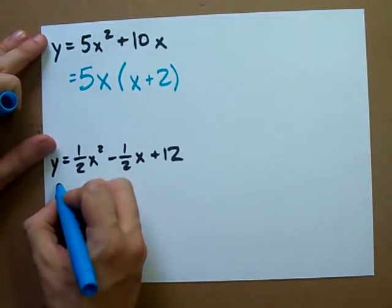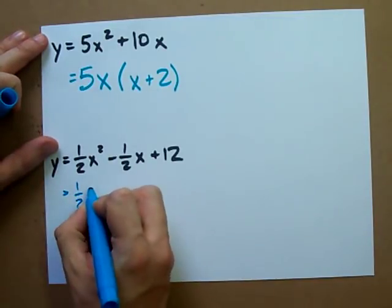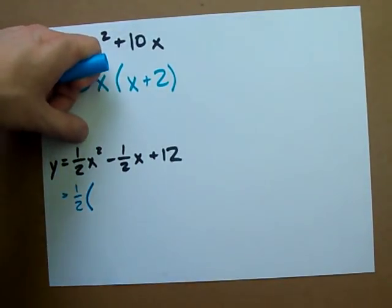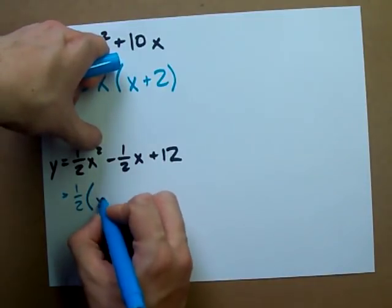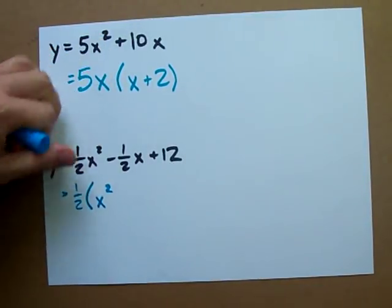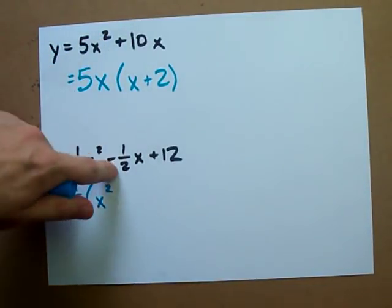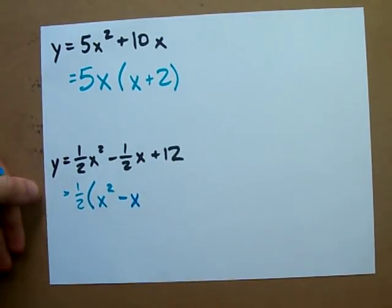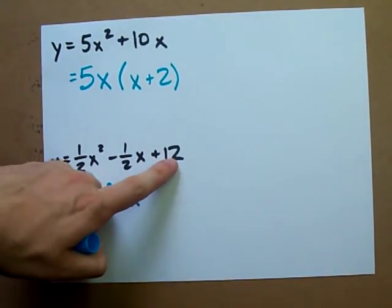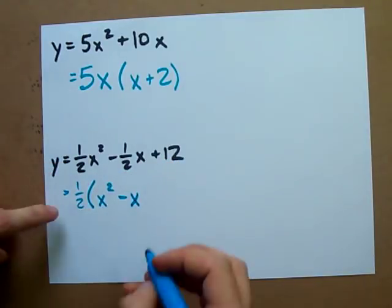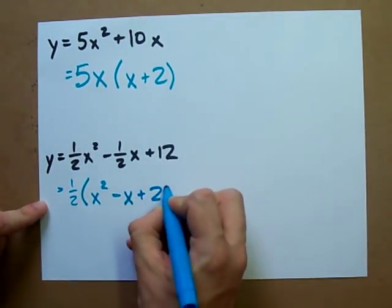You know what? I could pull out a half here. And when I pull a half out of a half x squared, I'm obviously left with x squared. When I pull out a half from negative a half x, I'm left with negative x. And when I pull out a half from positive 12, I'm left with positive 24.